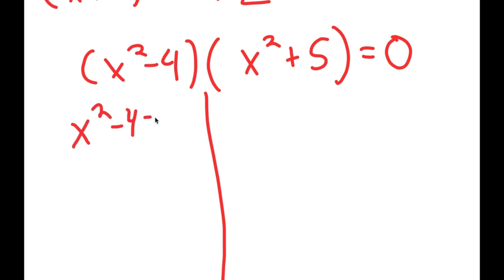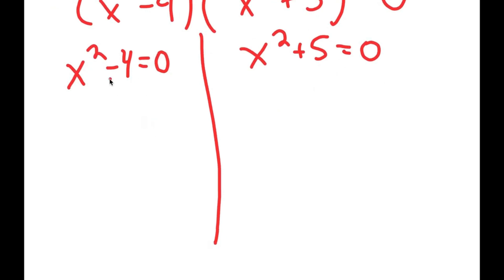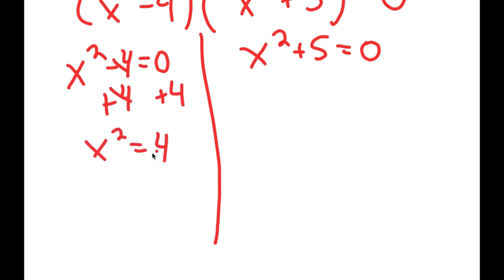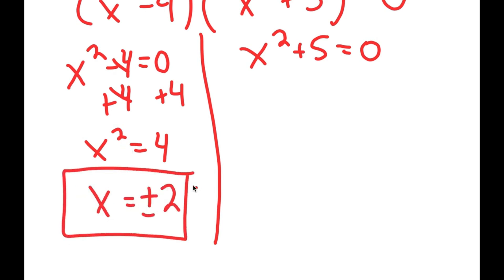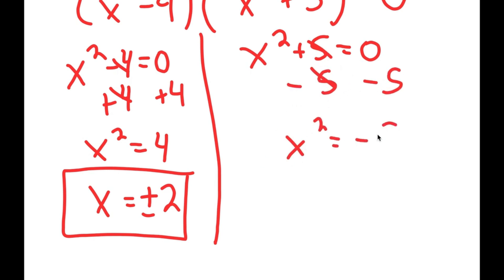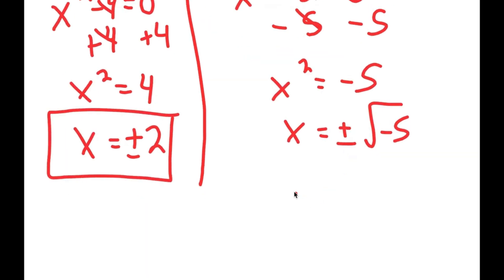So x plus 2 times x minus 2 is x squared minus 4, and I have this times x squared plus 5, equal to 0. This gives me two equations: x squared minus 4 equals 0, and x squared plus 5 equals 0. For x squared minus 4 equals 0, adding 4 on both sides gives x squared equals 4, so x equals positive or negative 2. For x squared plus 5 equals 0, x squared equals negative 5, giving x equals positive or negative square root of 5 times i.